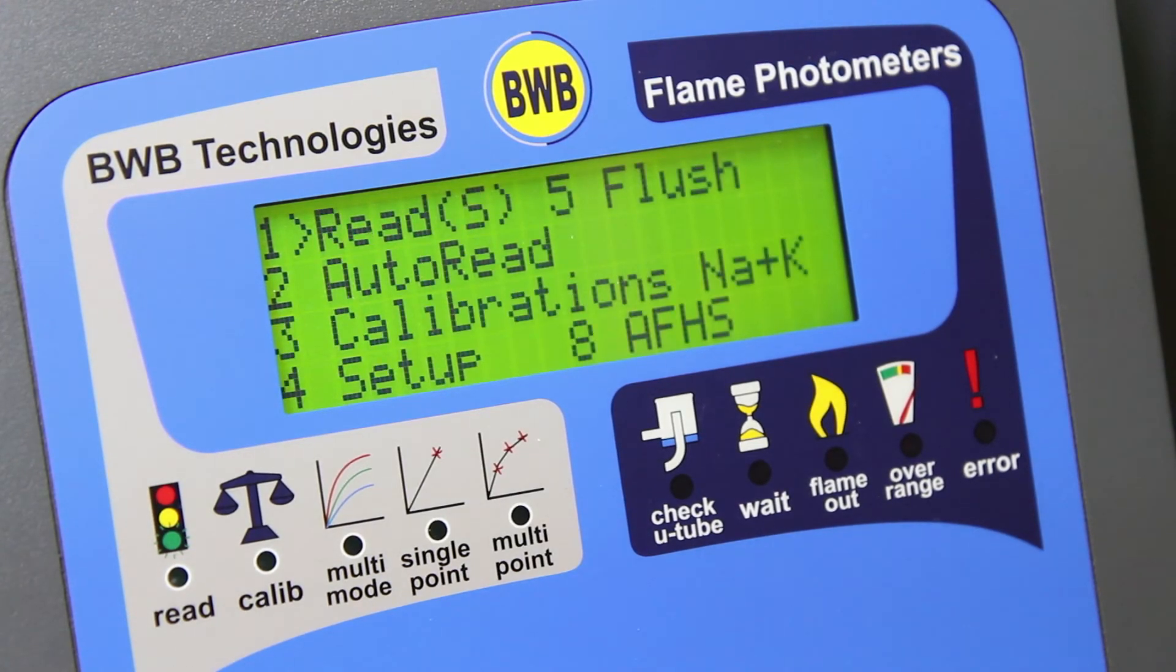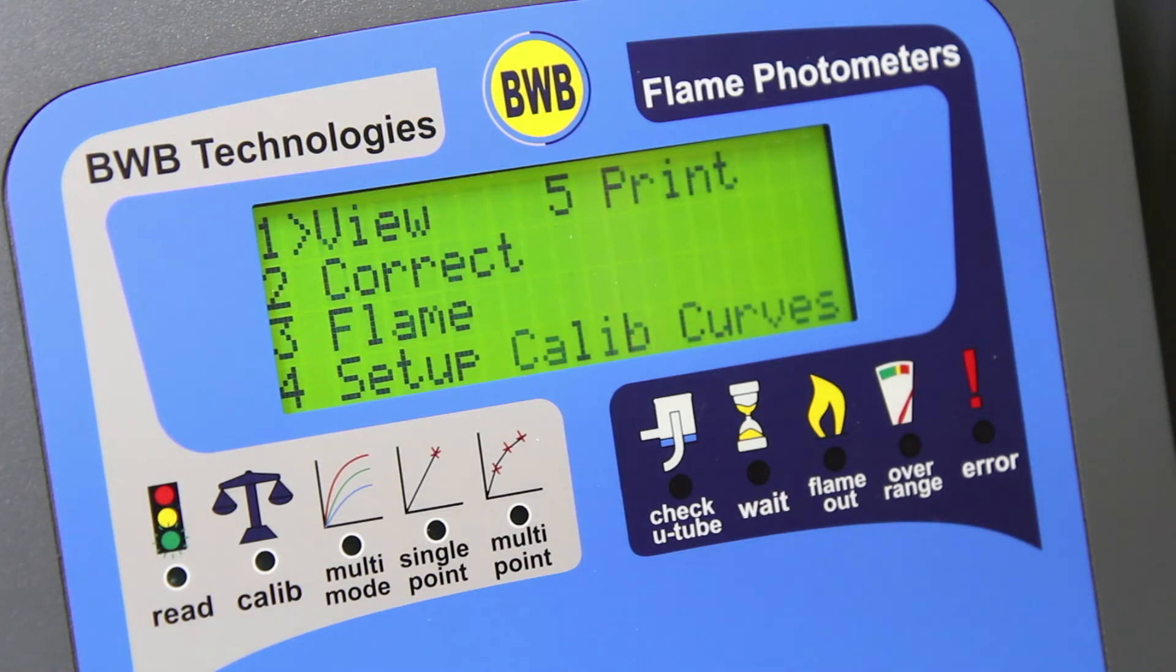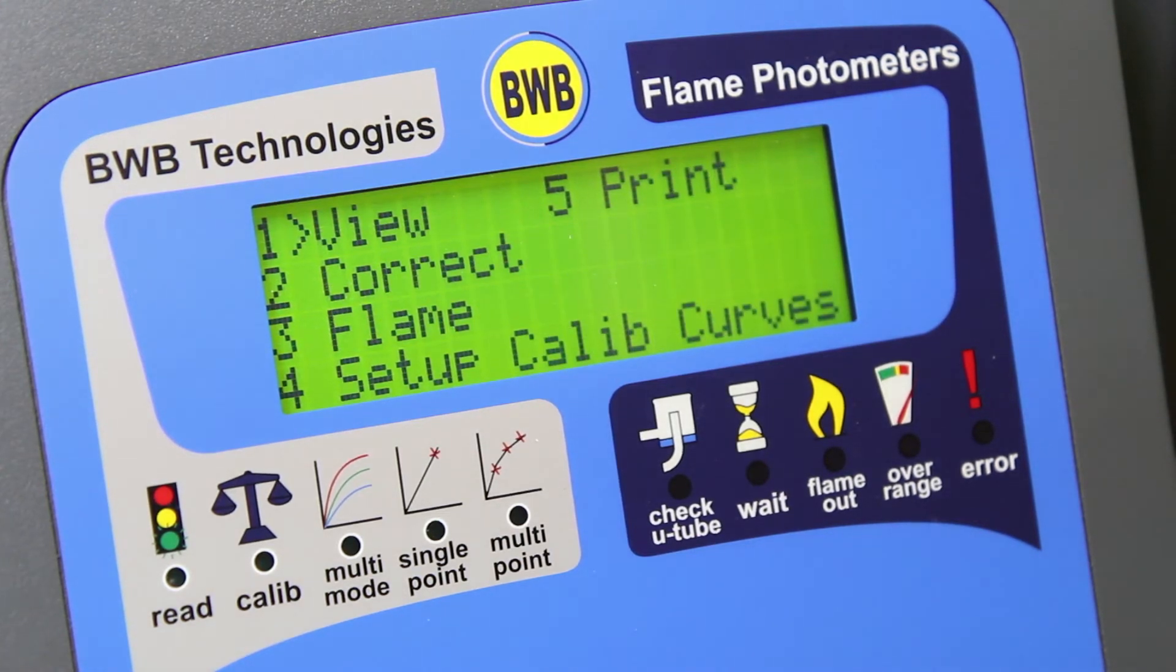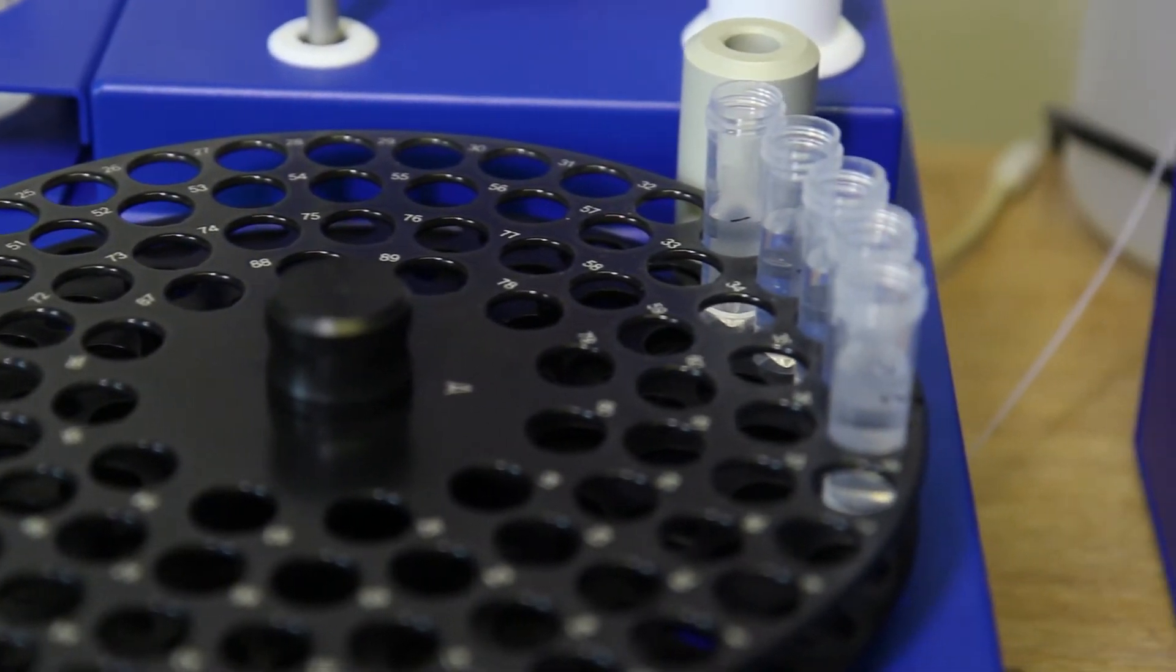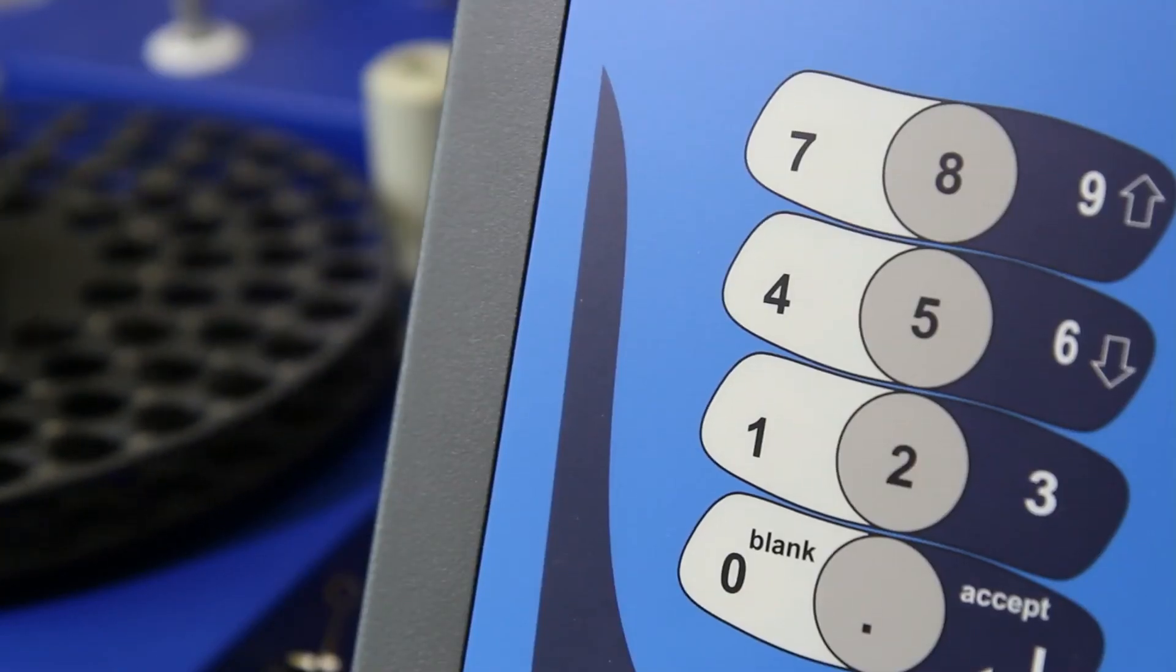The option of setting up the calibration curves is then available. Select calibrations, set up calib curves and press accept to begin the automated calibration process. The process takes approximately 20 minutes to complete.